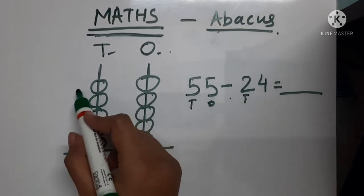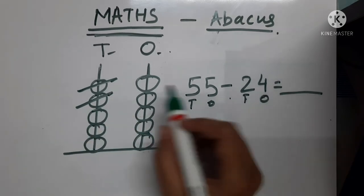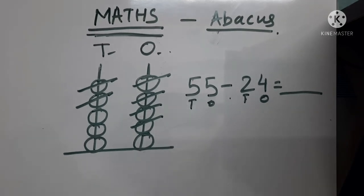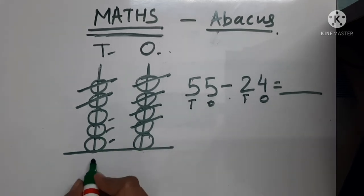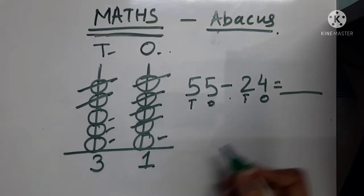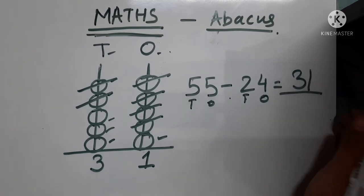2 from the tens place. So, let us cut. 1, 2 and 4 from the ones place. So, 1, 2, 3, 4. So, how many beads left? 1, 2, 3 in the tens place and 1 in the ones place. So, 55 minus 24 becomes 31.